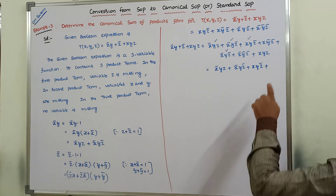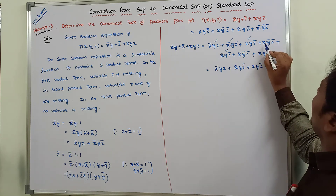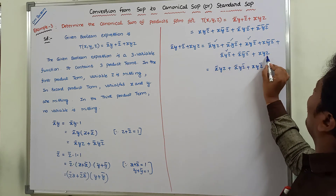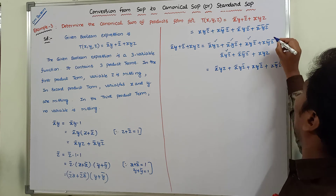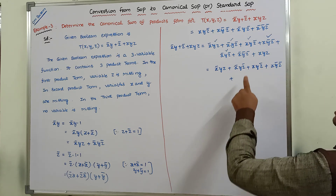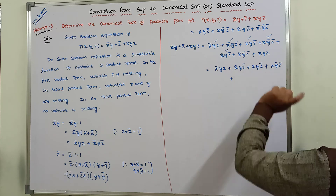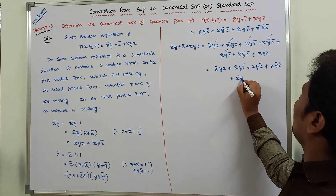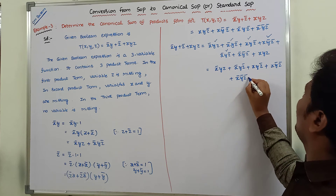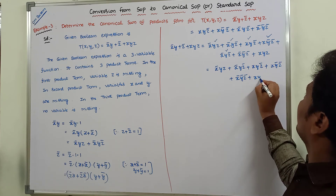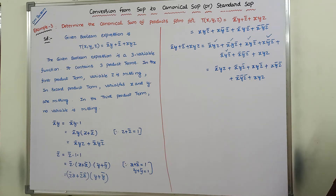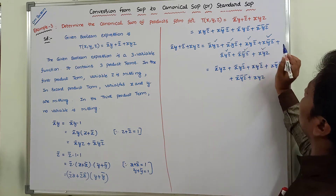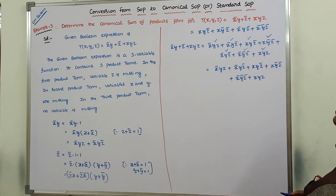Continuing the elimination: xyz̄ occurred only once, so we write it. xȳz̄ occurred only once, so we write it. x̄ȳz̄ occurred only once, so we write it. And xyz is the third original product term with no missing variable. After eliminating all redundant terms, only one term was eliminated from the full expansion.